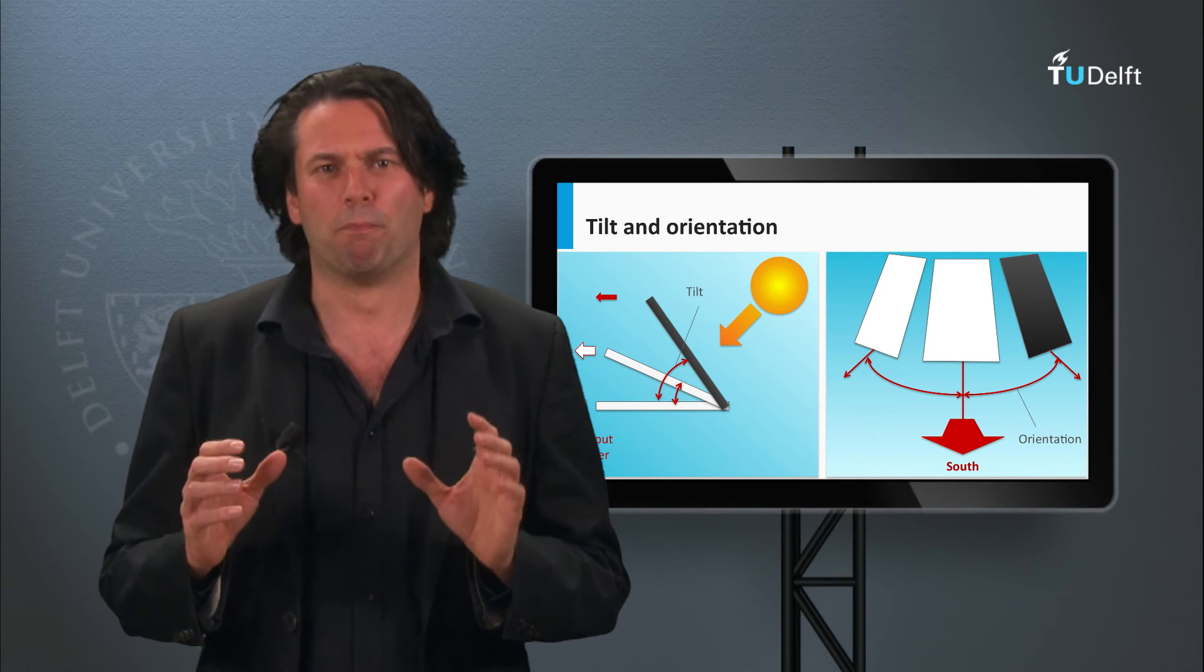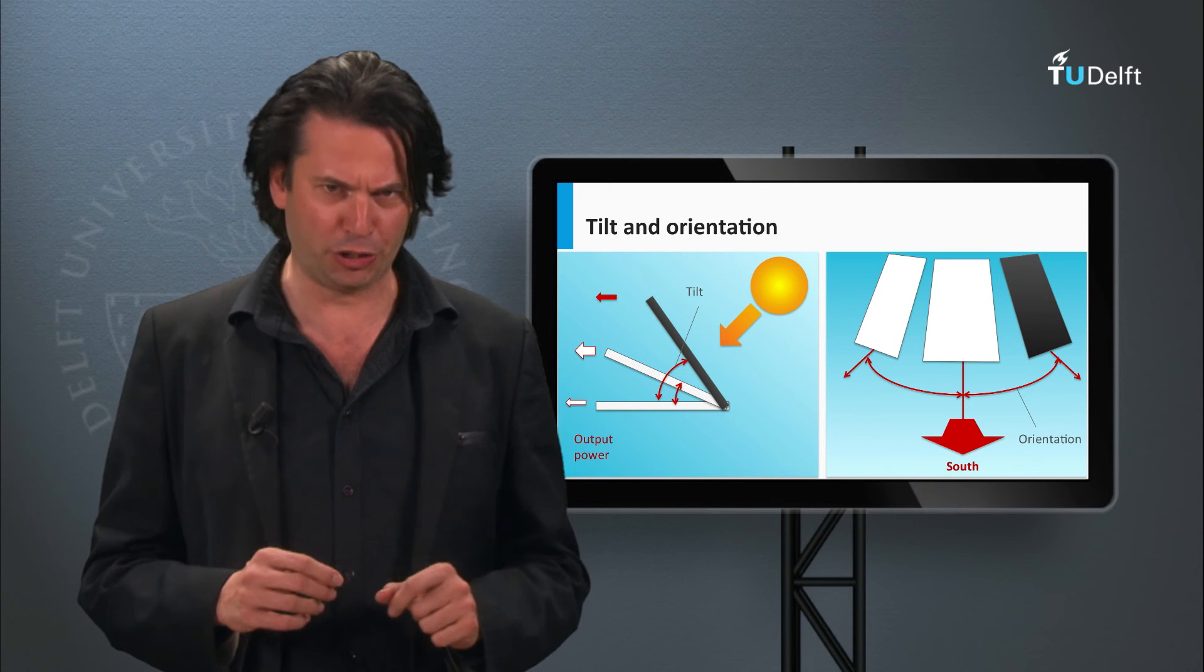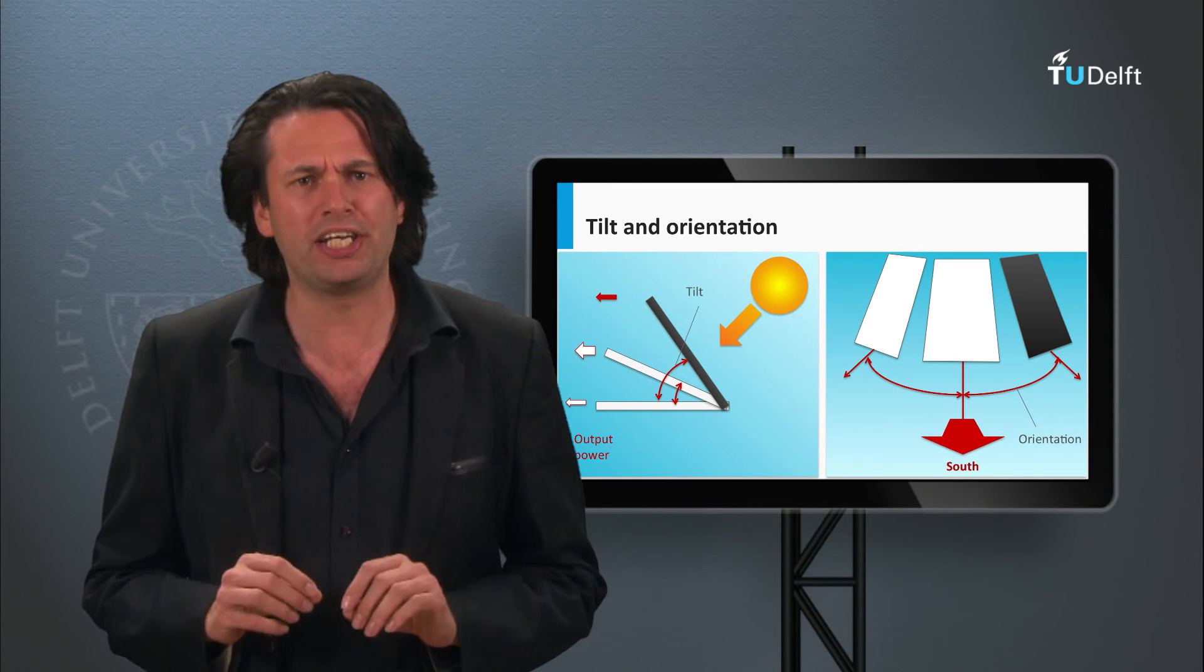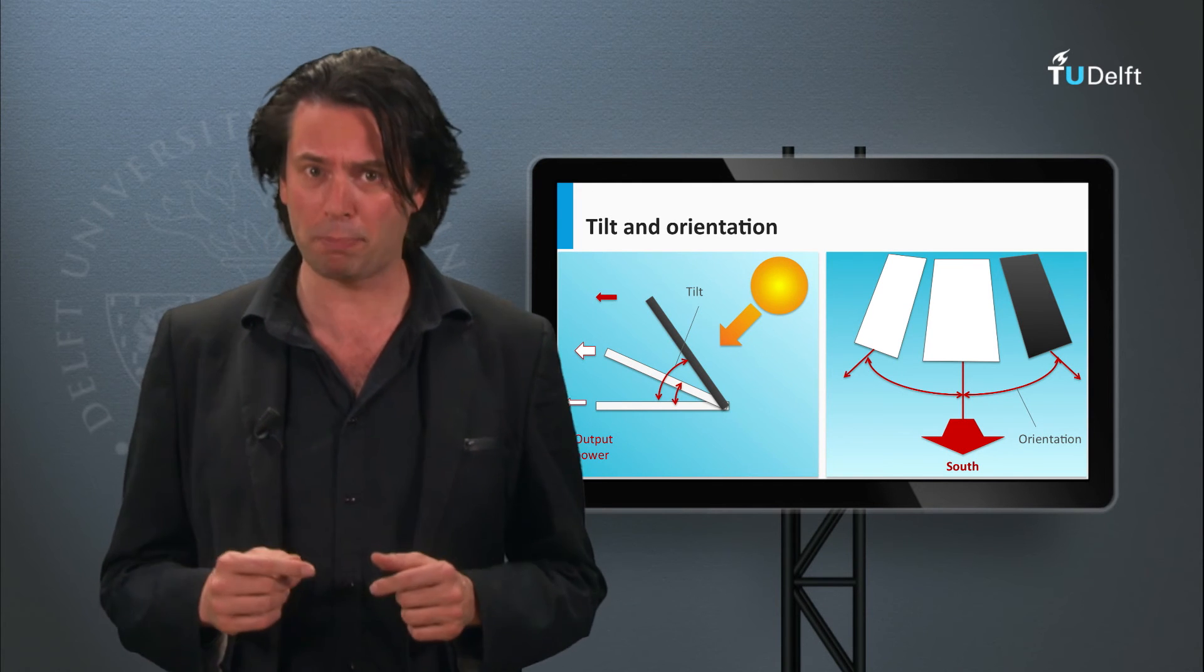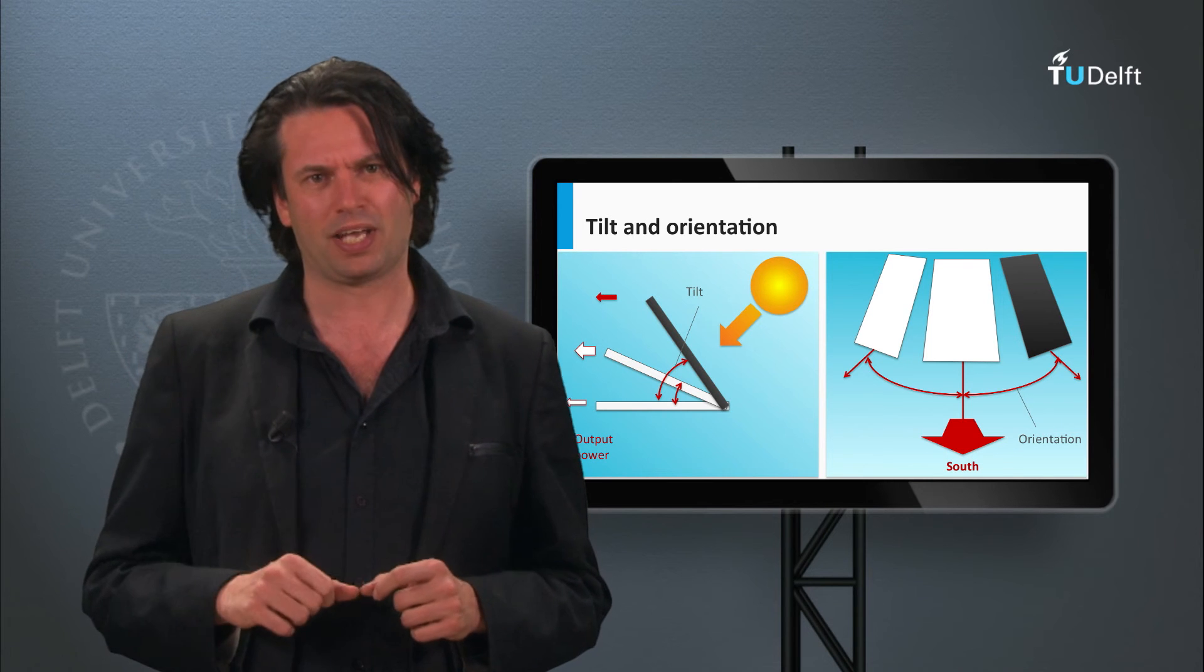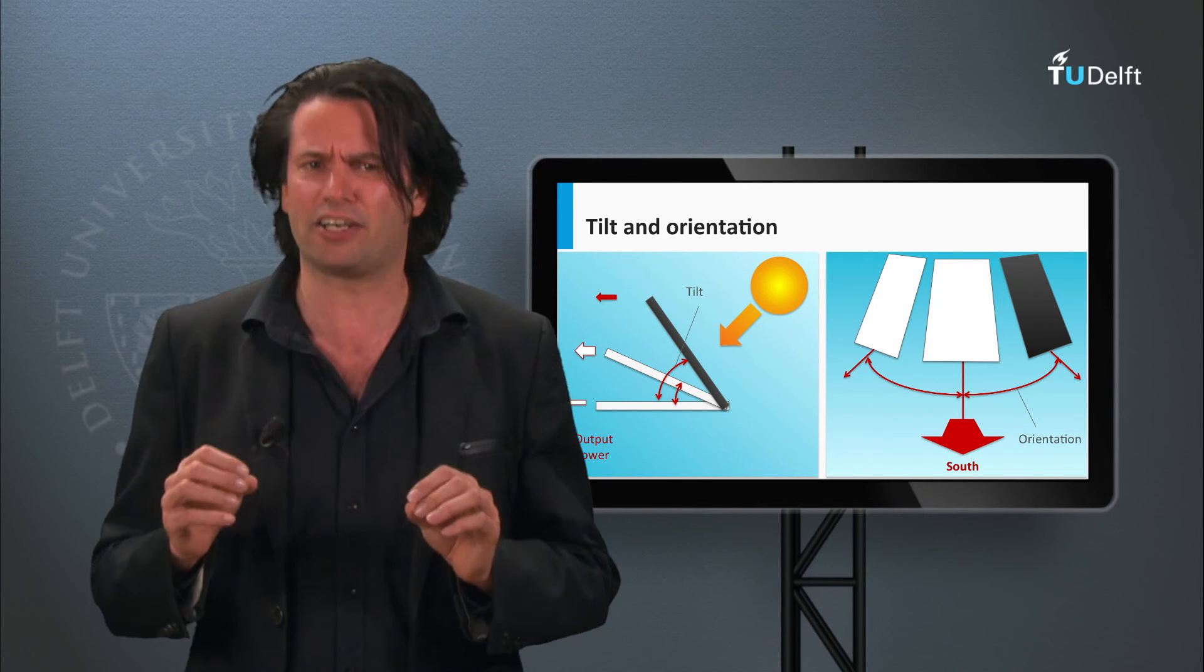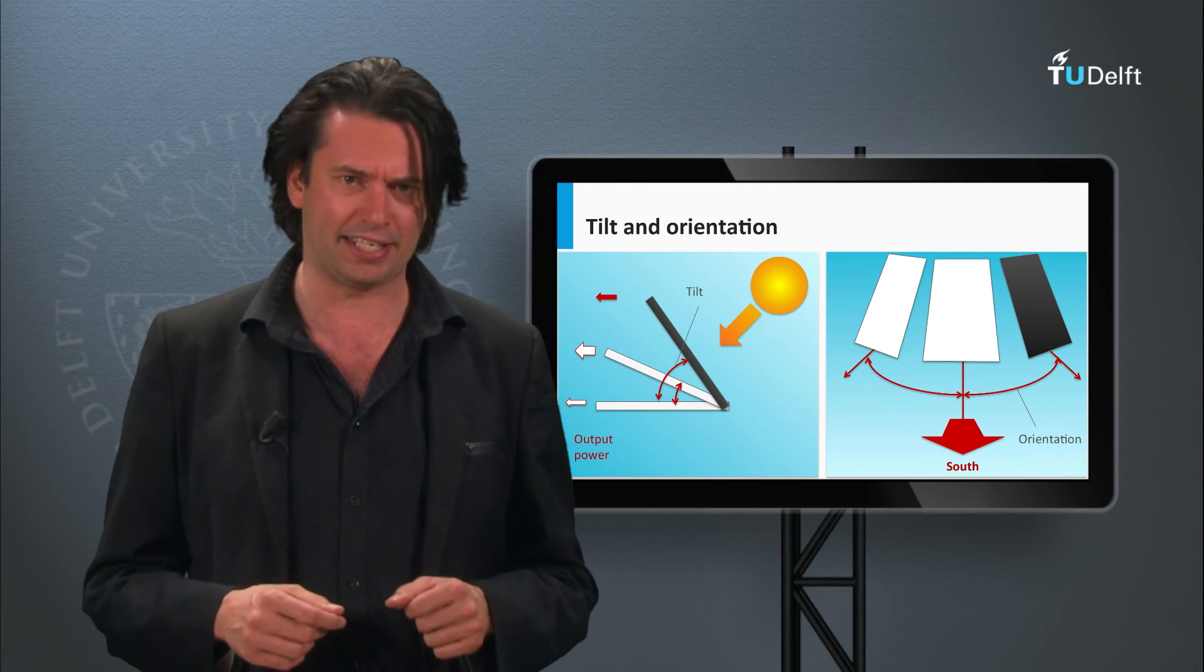Now most solar panels or systems don't have the luxury of employing a dual-axis solar tracker. Not only are they very expensive, they are also difficult to implement if the panels are to be mounted on the rooftop.